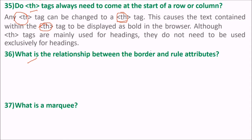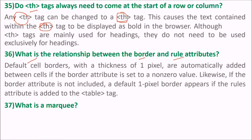What is the relationship between the border and the rules attributes? Default cell borders with a thickness of one pixel are automatically added between cells if the border attribute is set to a non-zero value. Similarly, if the border attribute is not included, this default one-pixel border appears if the rules attribute is added to the table tag.